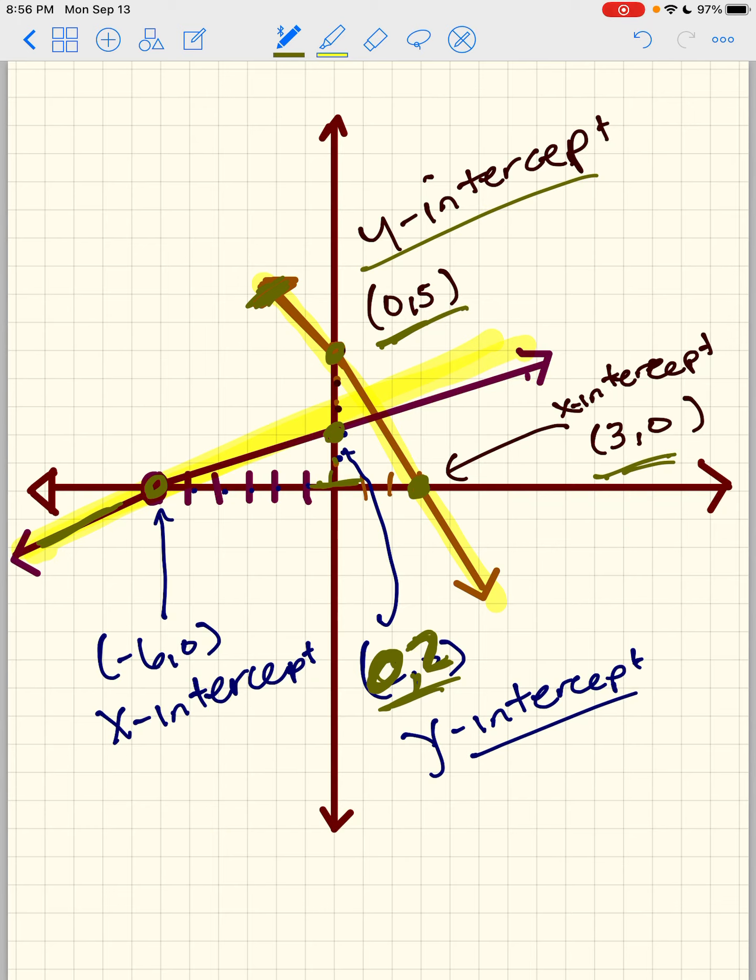So what do we notice here? For the y intercept, my x is 0, 5. For the y intercept, my x is 0, 2. So for my y intercept, my x was 0. That makes sense. If a line passed through any of these ticks that I'm making, it would be 0, a value. My x intercept, on the other hand, is 3, 0 and negative 6, 0. So what does that mean? That means my y is 0 for my x intercept. So for my y intercept, my x is 0, and for my x intercept, my y is 0.